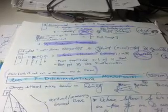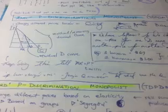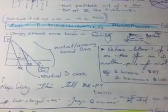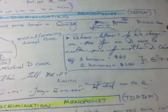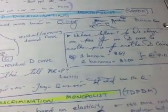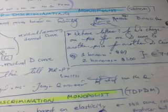So our first degree price discriminating monopolist is based on reservation prices and stealing away all the consumer surplus. Second degree price discrimination is about quantity discounts. Buy one, get one free. Think of it as getting two items. That's second degree price discriminating.